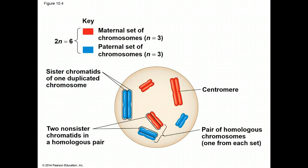This figure shows a diploid cell with replicated or duplicated chromosomes. During meiosis, the diploid cell in the ovary and the testicle will give rise to haploid cells referred to as sperm and eggs. Another name for the sperm and egg is a gamete. In this figure, the diploid, also known as the 2N number, is 6. There are 6 chromosomes in this cell.